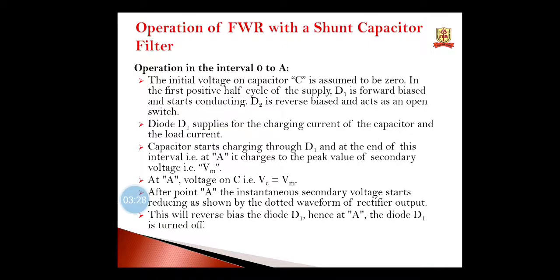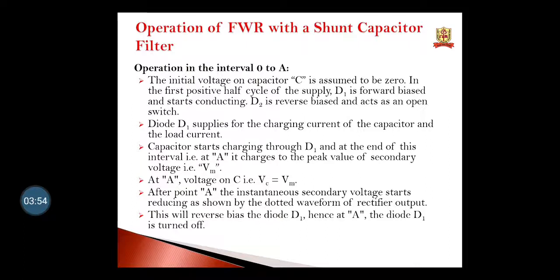This is the operation of the full wave rectifier with shunt capacitor. In the interval 0 to A, the capacitor starts charging to maximum value because D1 is on and supplies current to the capacitor and the load. The capacitor starts charging through D1, and at the end of this interval at point A, it charges to the peak value — the maximum value of the secondary voltage, Vm — and the voltage across the capacitor equals Vm.